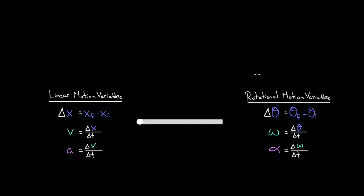In the previous couple of videos, we defined all these new rotational motion variables, and we defined them exactly the same way we defined all the linear motion variables. For instance, angular displacement was defined the exact same way we defined regular displacement — it's just the angular position as opposed to the regular position.